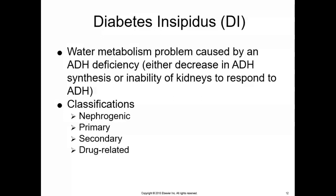For diabetes insipidus, there is an ADH or antidiuretic hormone or vasopressin deficiency. The ADH is low, or the ADH is there but the kidneys don't respond to it, so ADH is not doing its job. In syndrome of inappropriate antidiuretic hormone, the ADH is there and it's in excess.